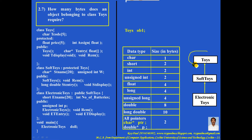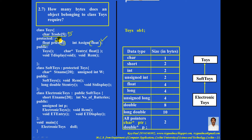Now we can find the size of each and every class separately. First, let me calculate the size of class Toys. There are 5 character variables: 1 byte each, so 1 into 5 equals 5. There are 5 floating point variables: 4 bytes each, so 4 into 5 equals 20. The remaining ones are functions — if you see the function symbol, understand it is a function. Size exists only for variables. So for the class Toys, the size is 20 plus 5, which is 25 bytes.